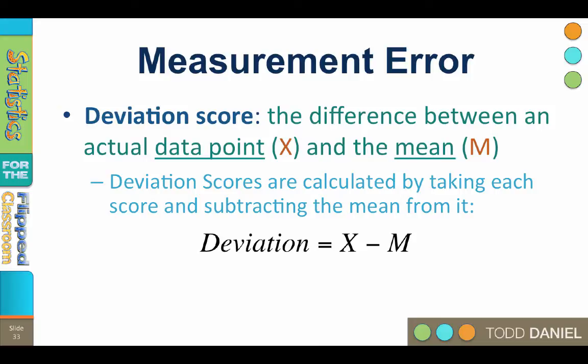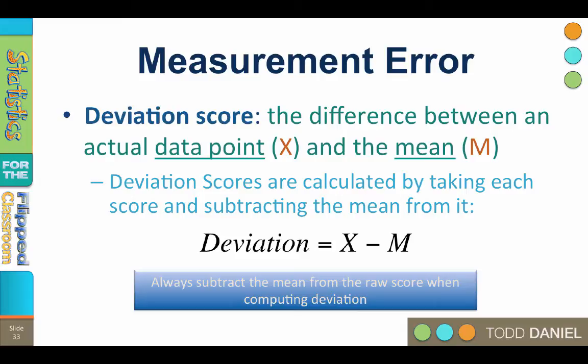The 6 foot 0 player has a deviation score of positive 2. A 5 foot 8 player has a deviation score of negative 2. A 5 foot 10 player has a deviation score of 0. Always subtract the mean from the raw score when you are computing deviation scores.